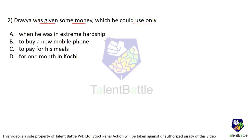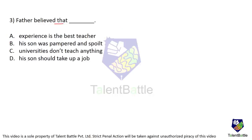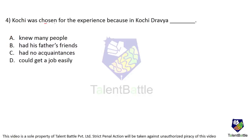Question 2: Dravya was given money he could use only when he was in extreme hardship — option A, correct. Other options — to buy a new mobile phone, to pay for his meals, for one month in Kochi — are all incorrect, since the express instruction was only to use it in an emergency. Question 3: What did the father believe? Option A — experience is the best teacher — is correct. He did not say universities don't teach anything; he said universities can't teach certain life skills. So the answer is option A. Question 4: Kochi was chosen because Dravya had no acquaintances there and the language was unfamiliar — option C is correct. He knew no one, had no father's friends there, and got 60 rejections when trying to find a job.